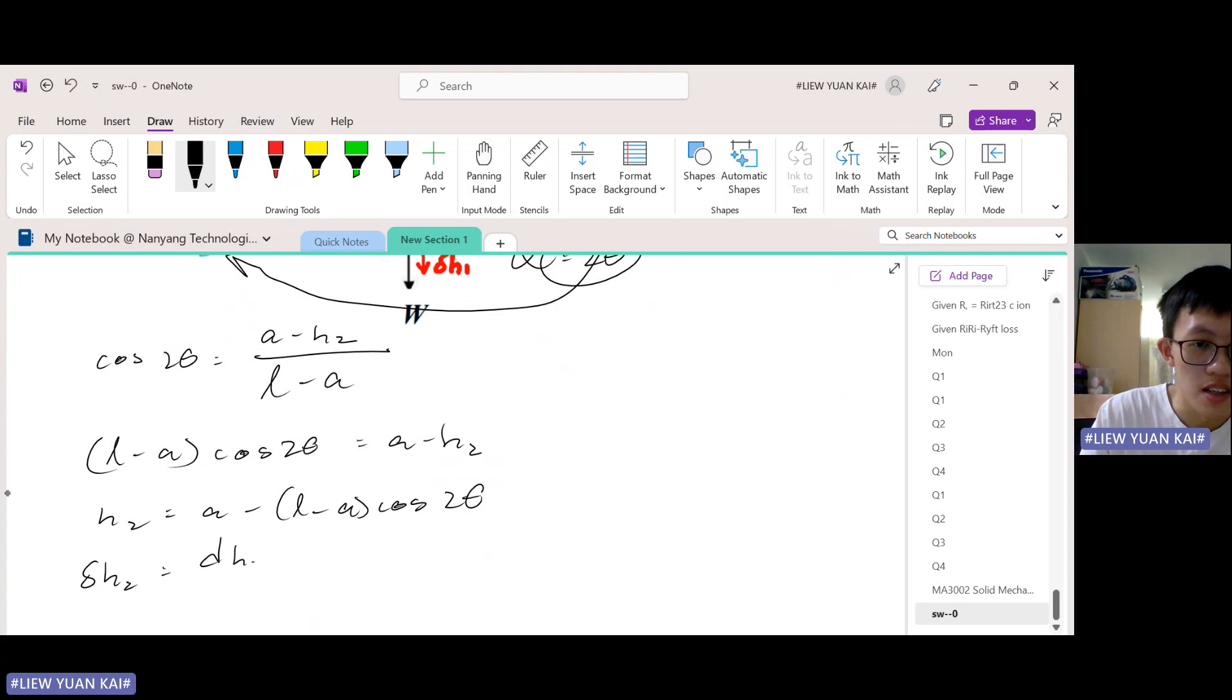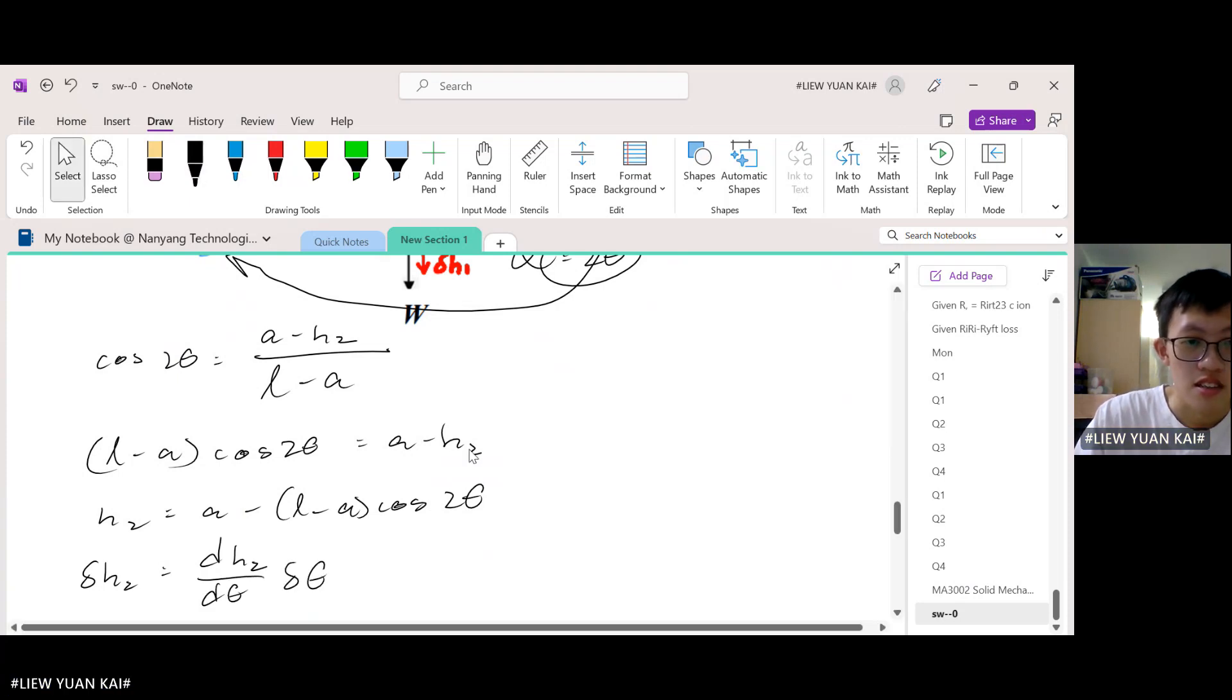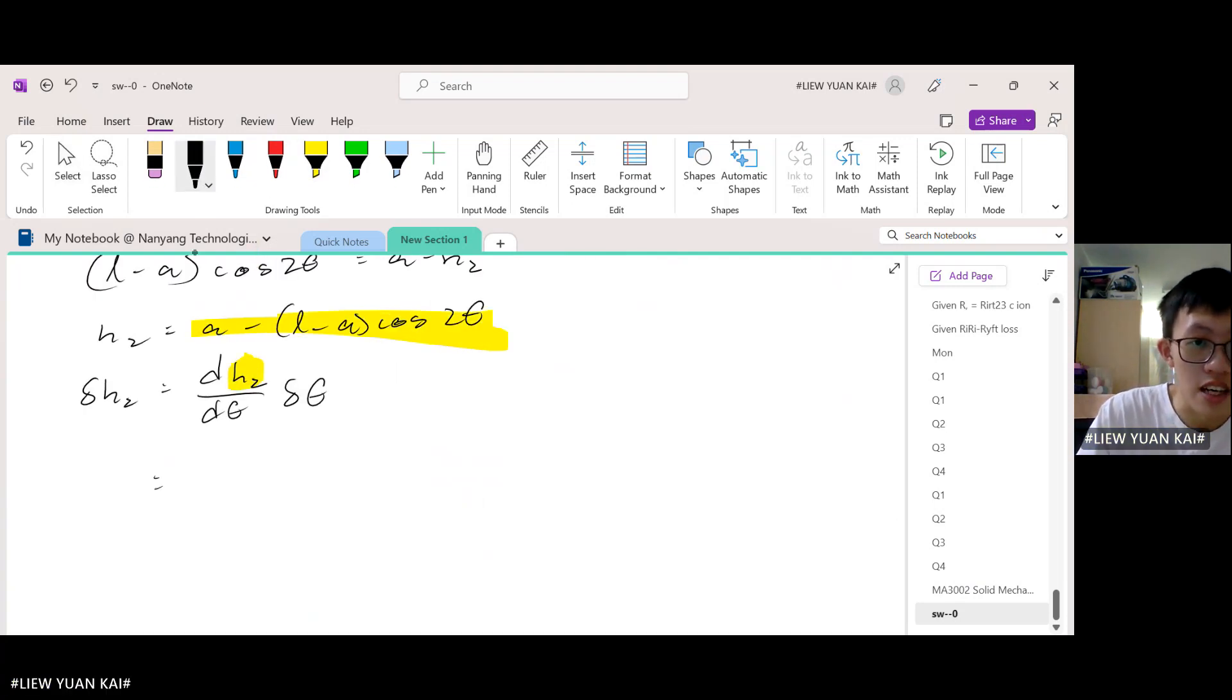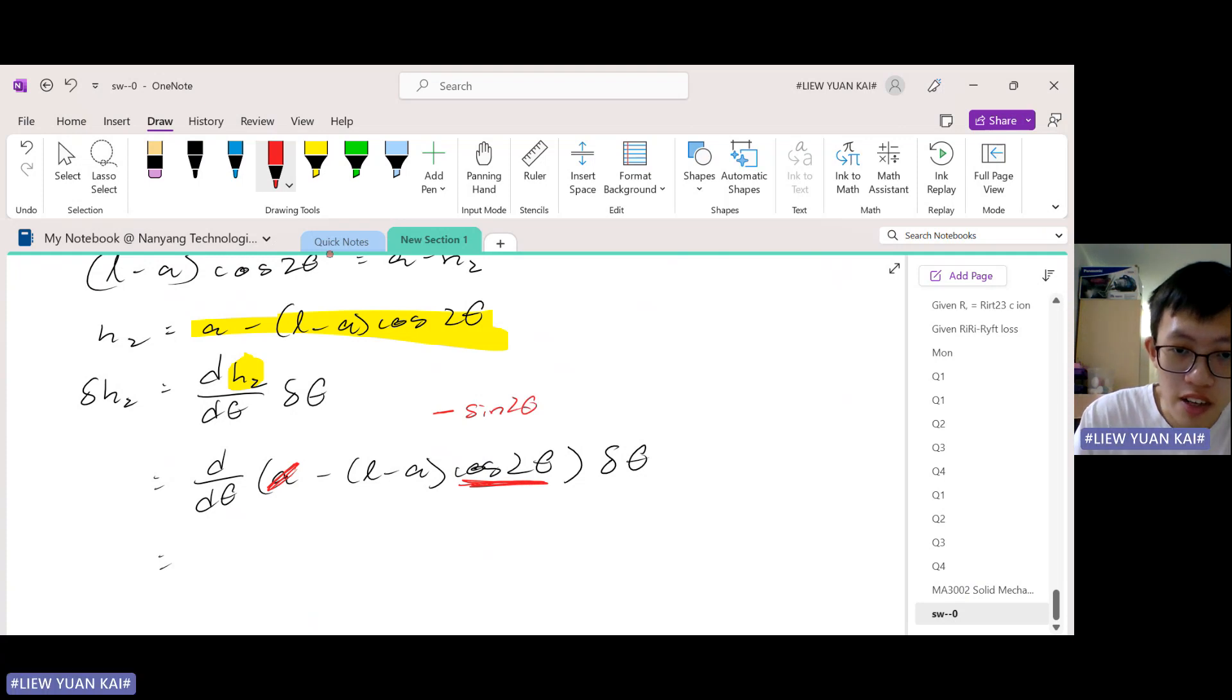Now we want to get delta h2, so we use the small approximate change formula: dh2 = d(h2)/d(theta) delta theta. So you put this into here: d/d(theta) of (A minus L cosine 2 theta) delta theta. Differentiation of a constant is just nothing, so this becomes zero. Now you differentiate this: the differentiation of cosine will be minus sine. Don't forget to differentiate the inside, so differentiating 2 theta you'll get 2. This negative can cancel with this negative, giving me L minus A, and this 2 I'll bring it to the front. So cosine 2 theta became sine 2 theta delta theta.